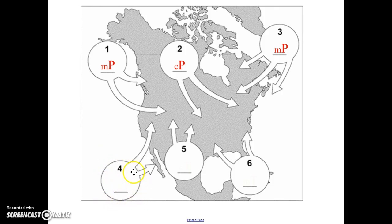Number four is forming over the Pacific Ocean. But it's near Mexico. It's closer to the equator. So the water there will be warm. So this would be maritime tropical.